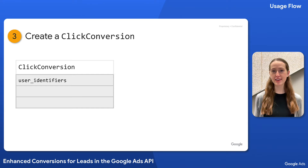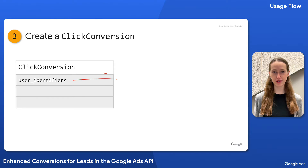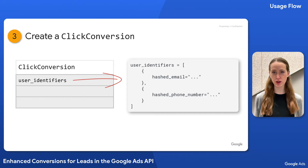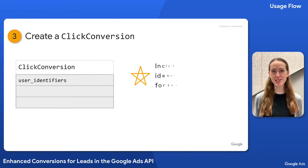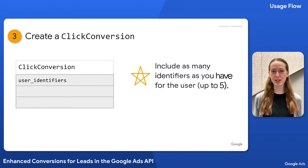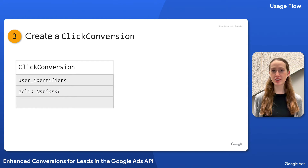The next step is to create a click conversion object for each lead conversion. The normalized and hashed user data goes in the user identifiers field of the conversion, with a separate user identifier object for each identifier. As a best practice, to increase the chances of finding a match for the user, include as many identifiers as you have for the user. If you have the GCLID available, you can include that in the conversion as well for optimal measurement.